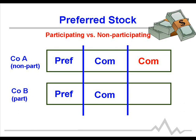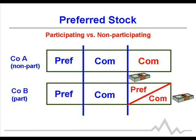In the case of Company B, where preferred shareholders have participating stock, preferred gets the original dividend, common gets an equivalent dividend, and then the remainder is shared between preferred and common shareholders. Preferred gets some and common gets some. That's the big difference between participating and non-participating preferred stock.